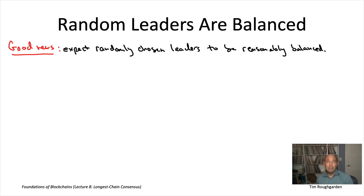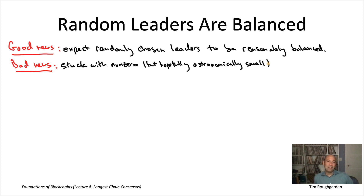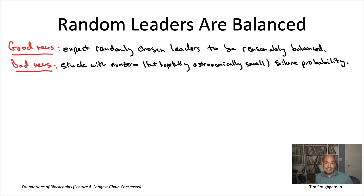So while with a round-robin order you're not even 2,000-balanced, with randomly chosen leaders you'd be 100-balanced or possibly quite a bit better. The catch with randomly chosen leaders is that anything can happen with positive probability. Even if you have 3,000 nodes and only one is Byzantine, there's always an astronomically small but positive chance that you keep randomly selecting that one Byzantine node over and over again — probability 1 over 3,000 raised to the length of the sequence.